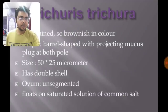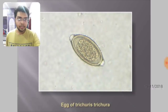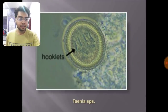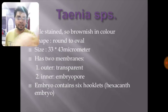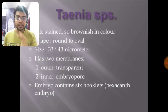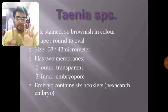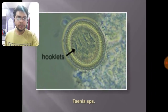Trichuris trichiura — you all know it is barrel-shaped with projecting mucus plugs at both poles. I don't think you will make a mistake with Trichuris trichiura. The Taenia species with hooklets: the characteristic feature is that these are also bile-stained, brownish in color. It has two membranes — the outer is transparent and the inner near the embryo is a little denser. The embryo contains six hooklets, so this is the characteristic hexacanth embryo with six hooklets. This is the Taenia egg.